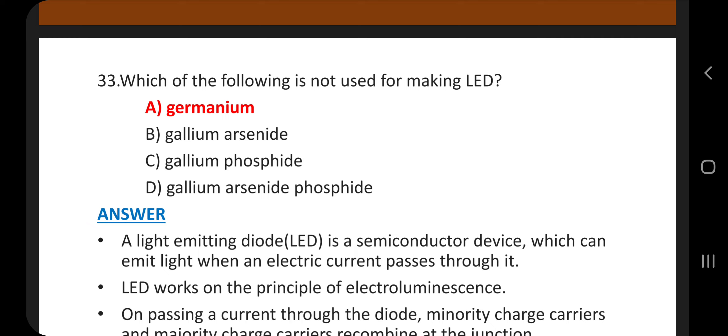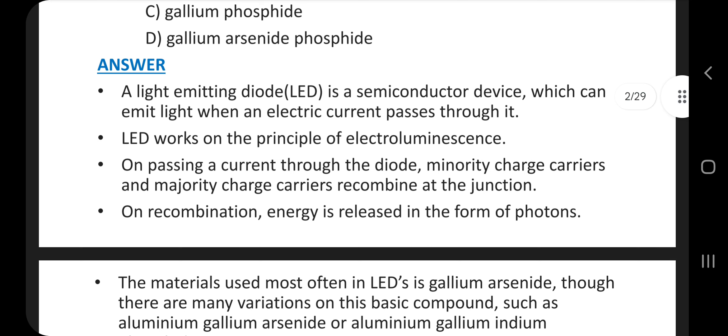Question number 33. Which of the following is not used for making LED? Answer is option A, Germanium. A light-emitting diode LED is a semiconductor device which can emit light when an electric current passes through it. LED works on the principle of electroluminescence.